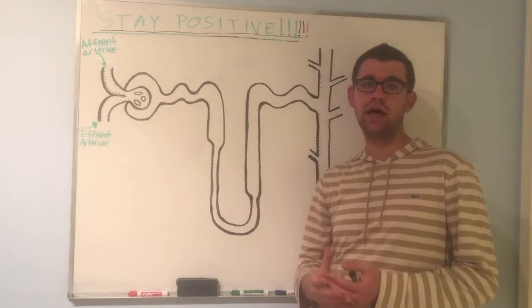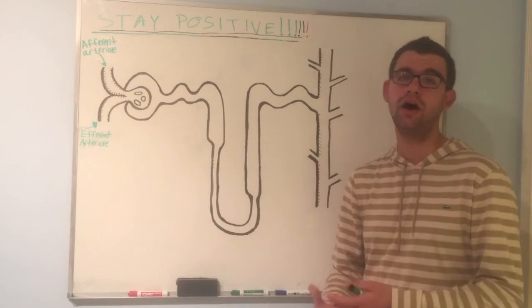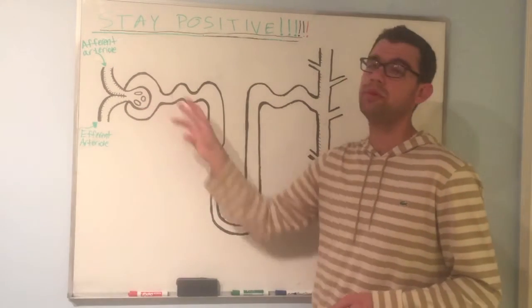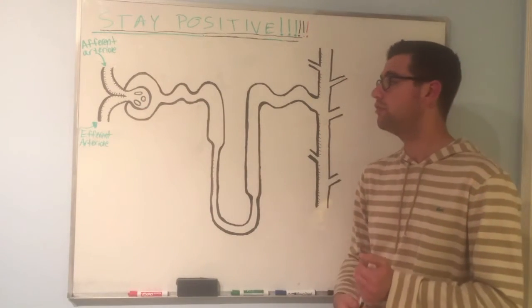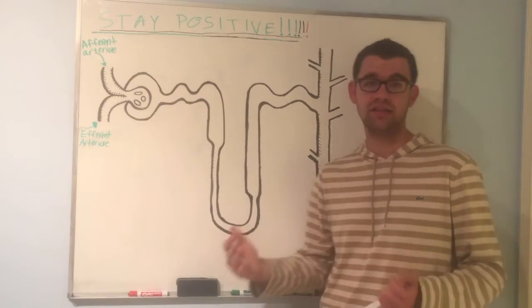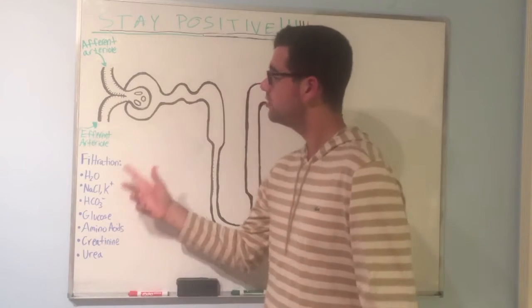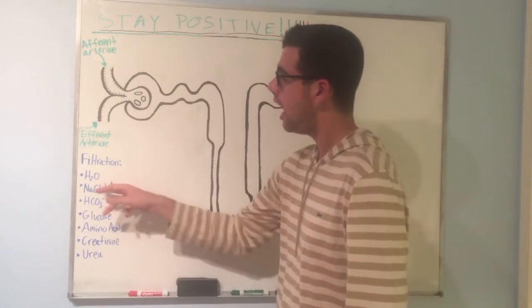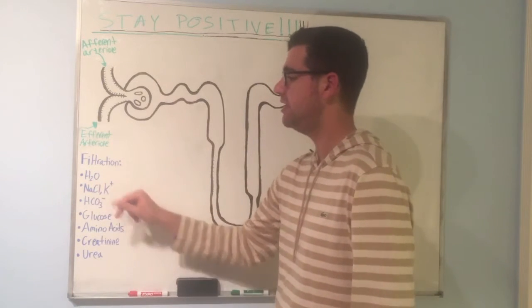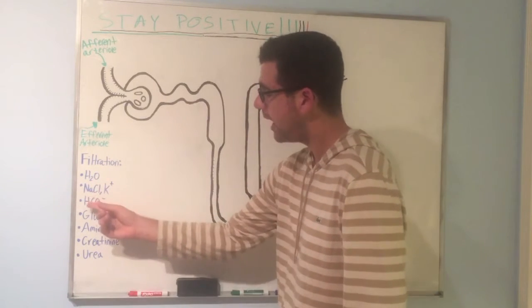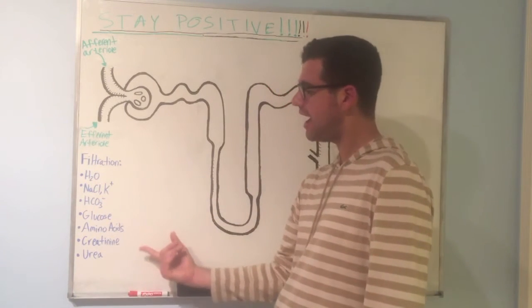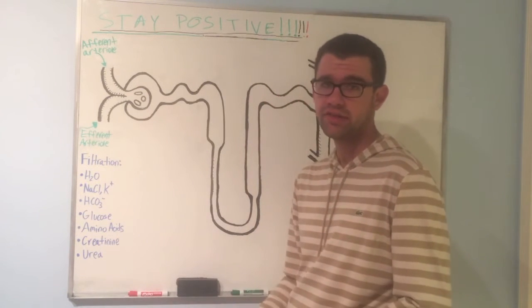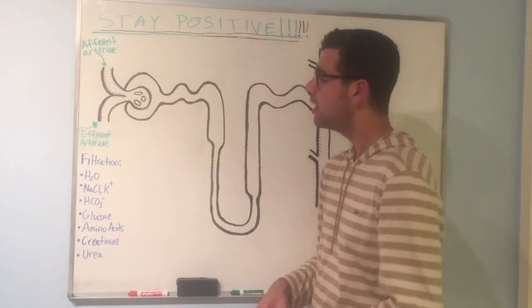Surrounding the glomerulus is Bowman's capsule. What's going to happen at this portion of the nephron is what we call filtration. Essentially, the blood is going to unload a ton of fluid out of the bloodstream into Bowman's capsule. So what types of things are filtered? At the glomerulus, we're going to be filtering out things like water, ions like sodium chloride and potassium, bicarbonate, glucose, amino acids, creatinine and urea. Creatinine and urea are basically waste products that we definitely want to get out.